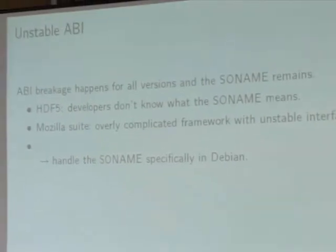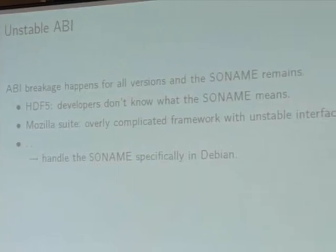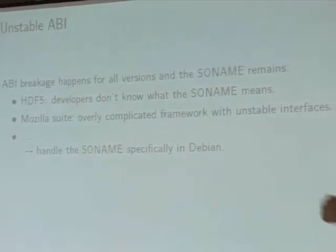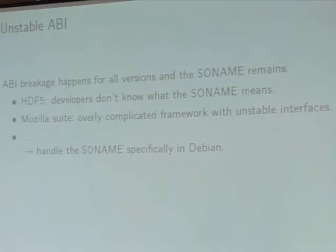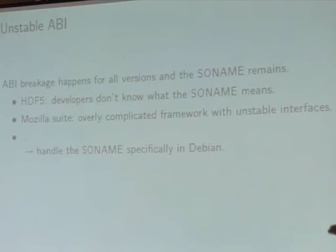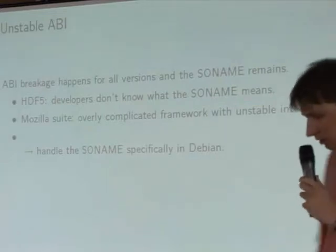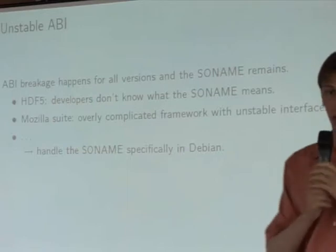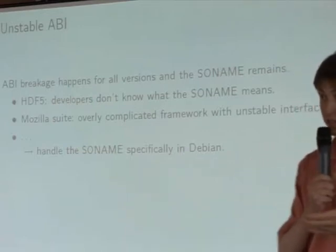Some upstream developers do this for every single upstream release. An example is HDF5, which is a scientific library, where the soname is always the same whereas function definitions are always changing. Another example is the Mozilla suite — at every new major version they change everything, and it's all entangled in a complicated framework that was not designed for Unix but for Windows. In these cases, you can handle the soname specifically in Debian, or as often recommended, use only the static library.